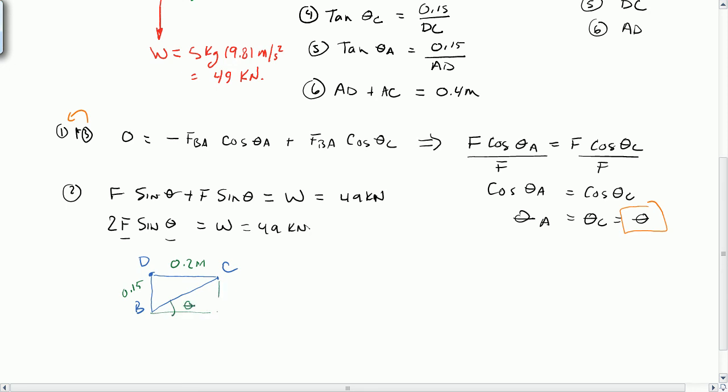So this is 0.15 as well. So we know that tangent of theta equals 0.15 divided by 0.20. So theta equals tangent inverse of 0.15 meters over 0.20 meters, and that gives us an angle of 36.87 degrees.